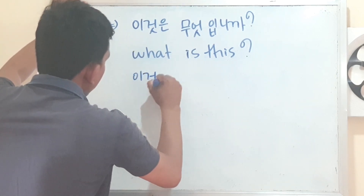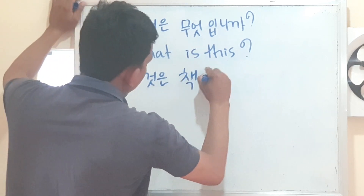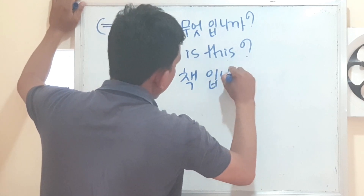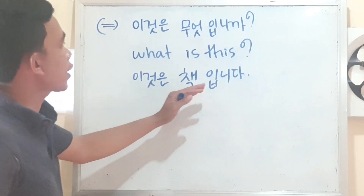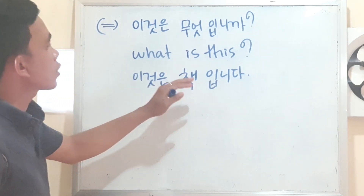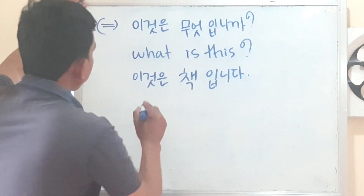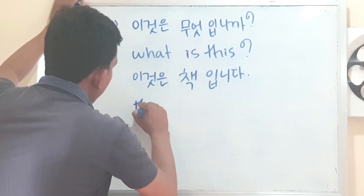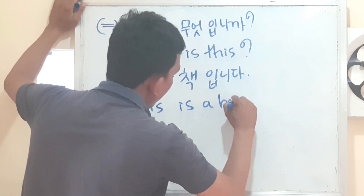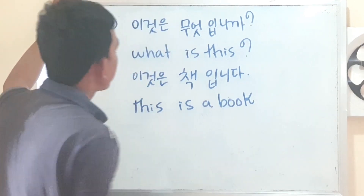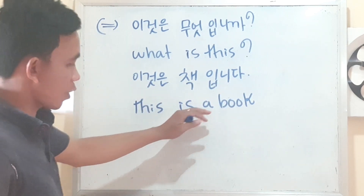You got: 이것은 책이에요다. Right — 이것은 책이에요다. That means 'this is a book.' Right — 이것은 책이에요다 means 'this is a book.' Right.